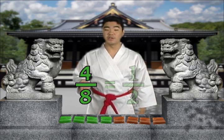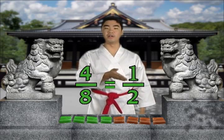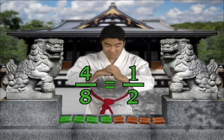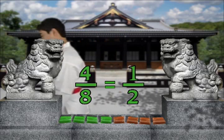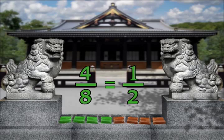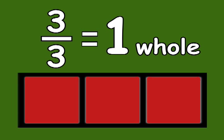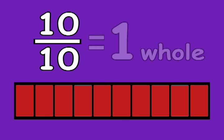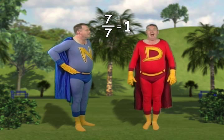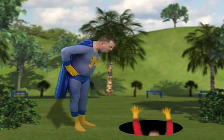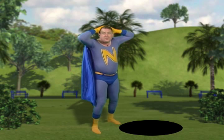Four-eighths is the same as one-half. This bar model is cut into three pieces, so the denominator is three. Now all three pieces are shaded red, so the numerator is three — three-thirds. Three-thirds is the same as one whole. Ten-tenths is the same as one whole. Seven-sevenths is equal to one whole! Wow, he just fell into one whole!